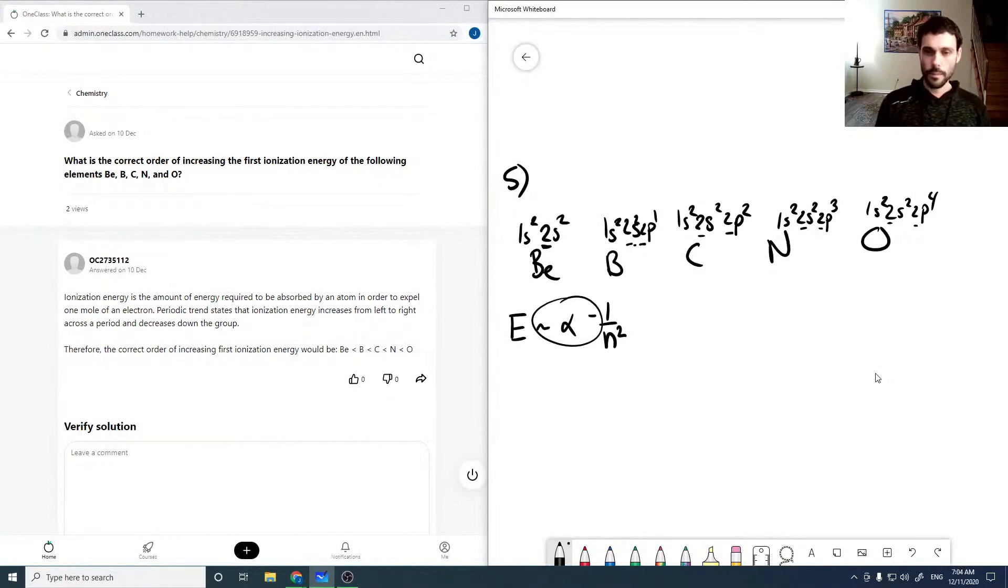It'd be better for me to put in this Z, so it's going to be approximately proportional to minus Z over n squared, where Z is our nuclear charge.